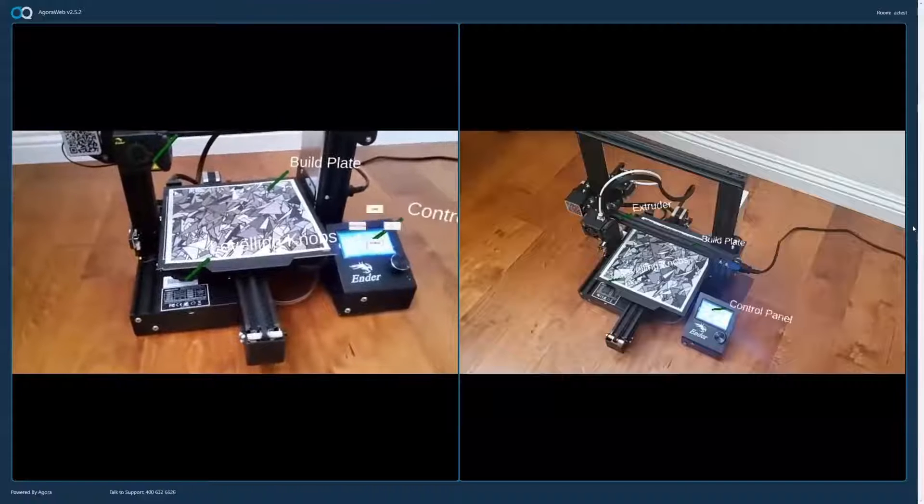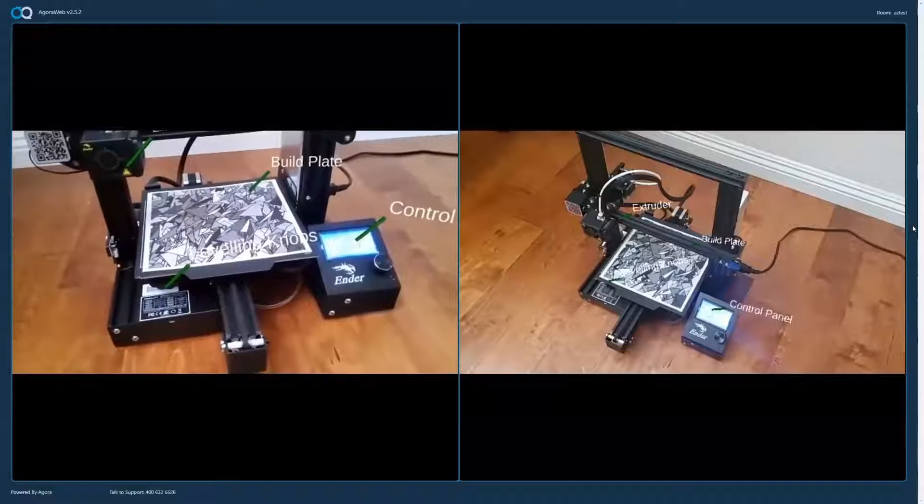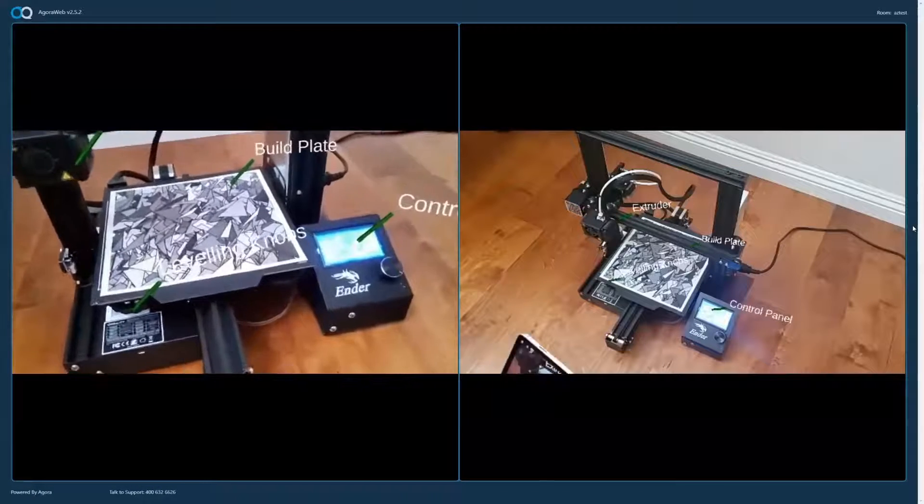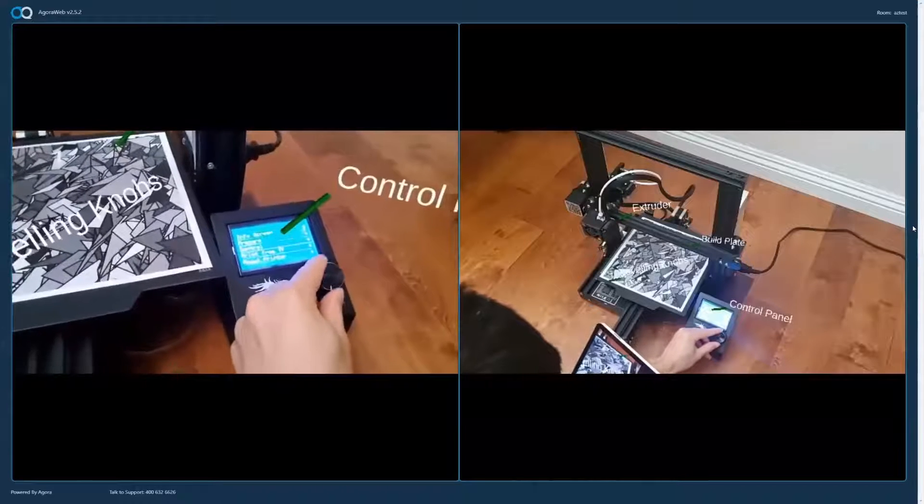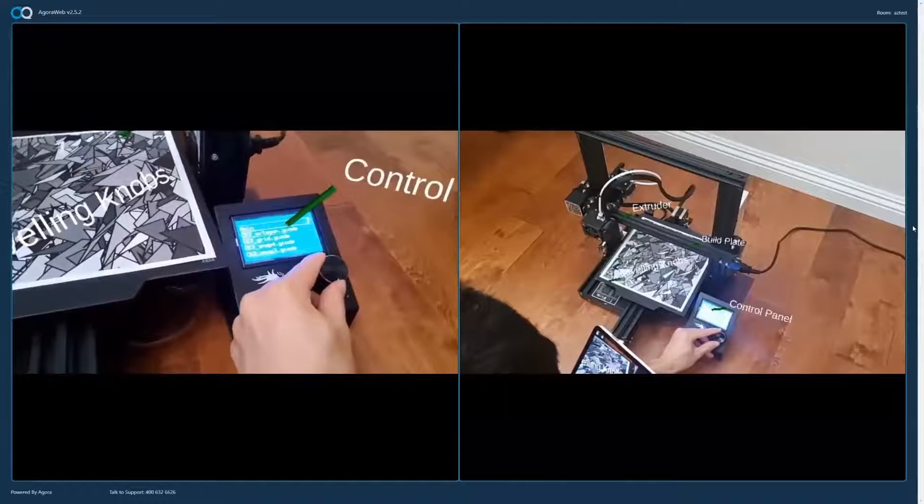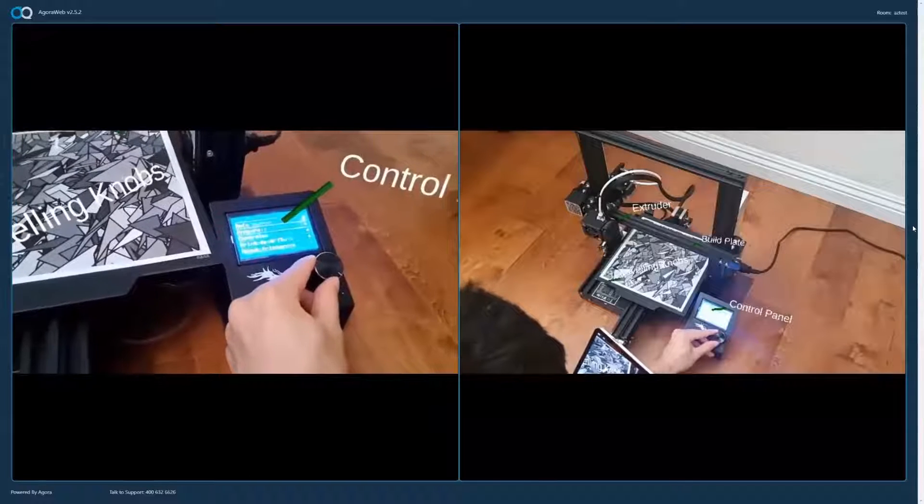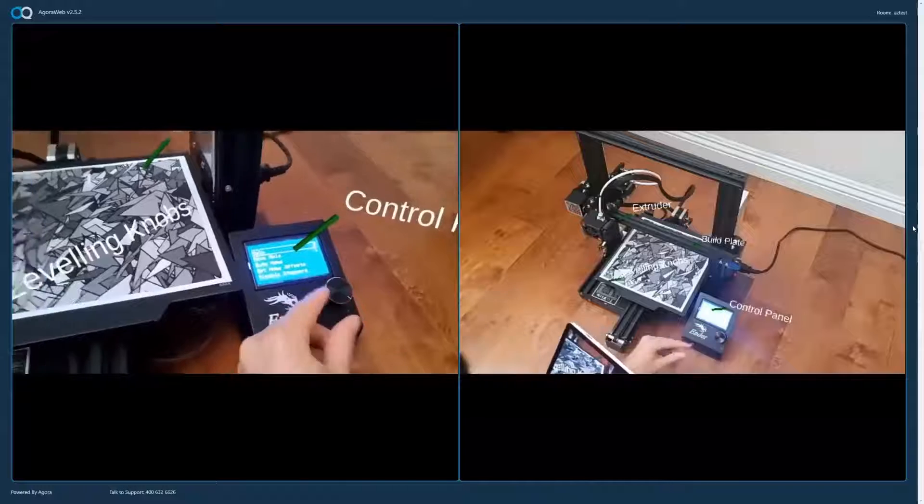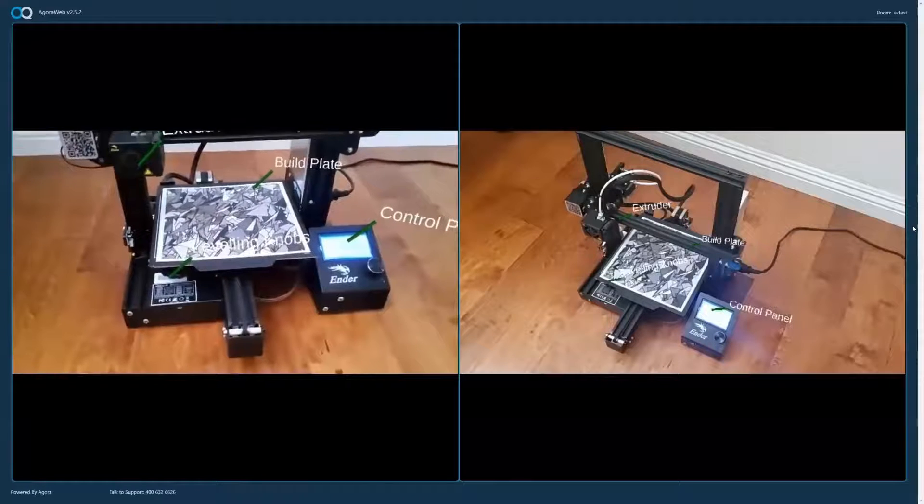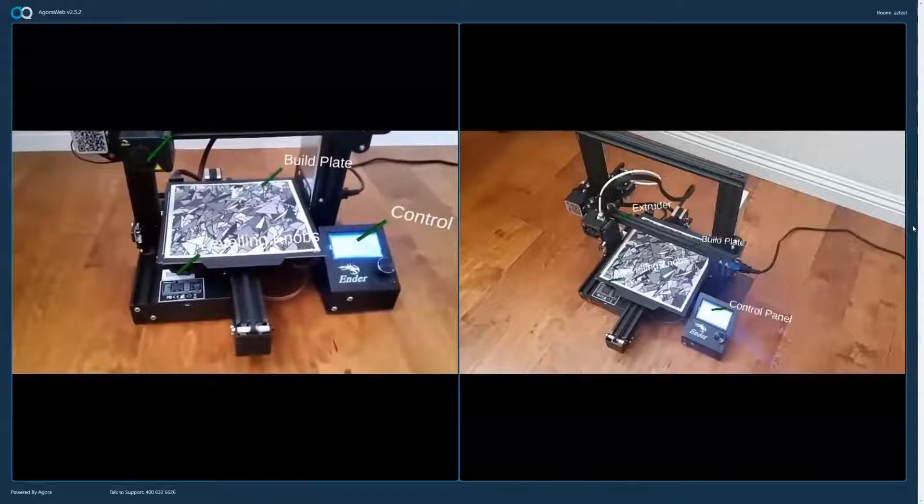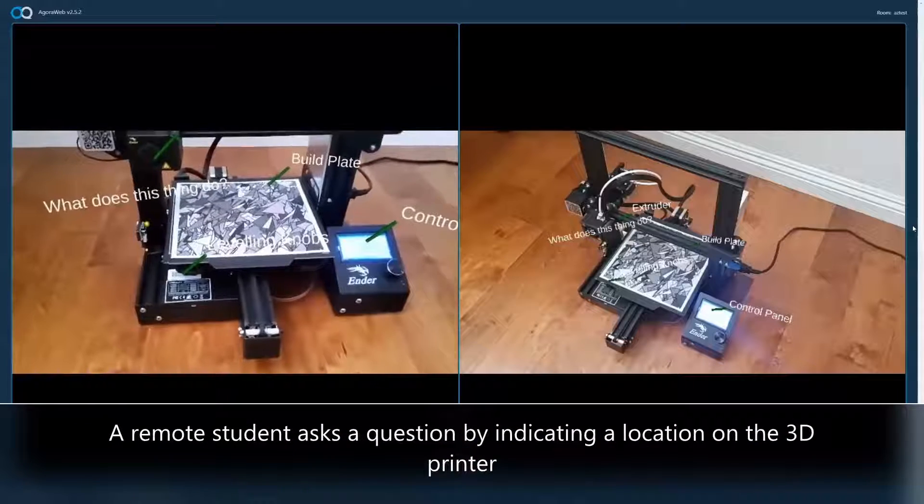And the last component I'll talk about is the control panel. This is the interface that you can use to choose what print you want to print by accessing the SD card. Here you can see the list of prints on my SD card, or you can just change some settings or adjust some of the parameters. So those are some of the main parts of the printer. Does anyone have any questions?